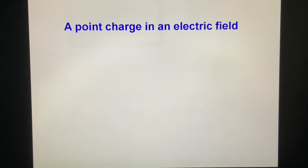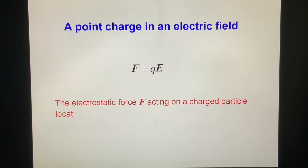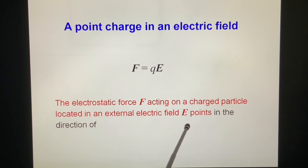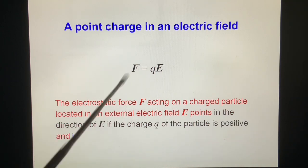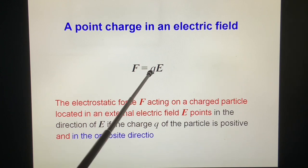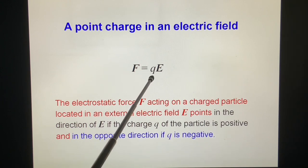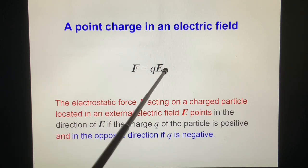A point charge in an electric field. That's very simple. It will be exerted at force F equal to qE. The electrostatic force acting on a charged particle located in an external electric field E points in the direction of E if the charge q of the particle is positive, and in the opposite direction of E if q is negative charge.